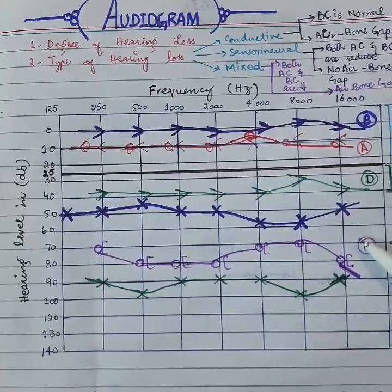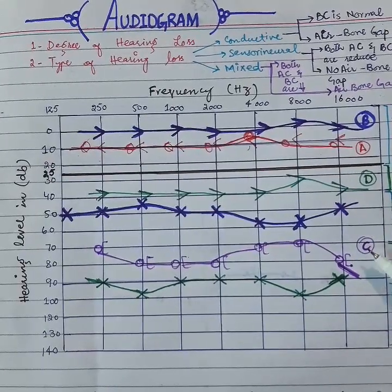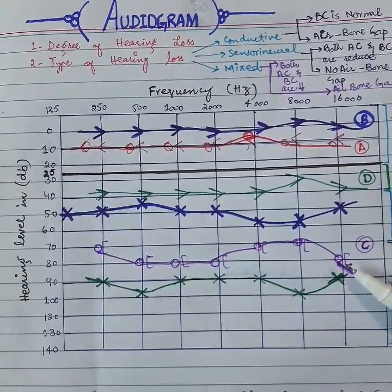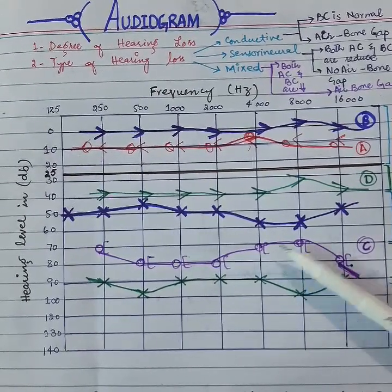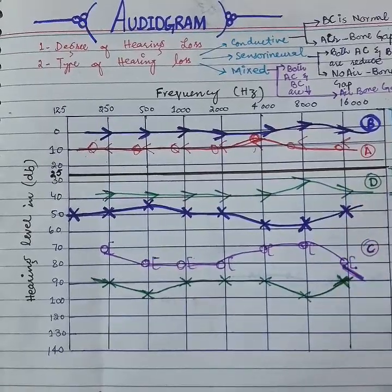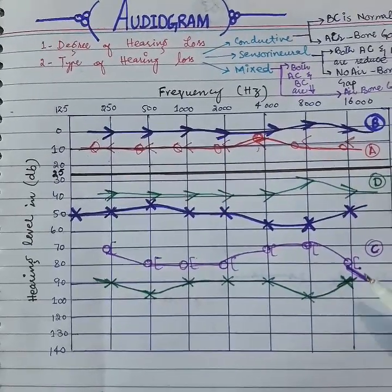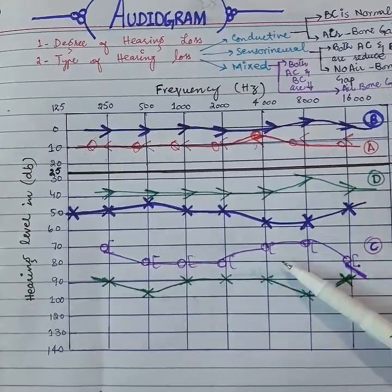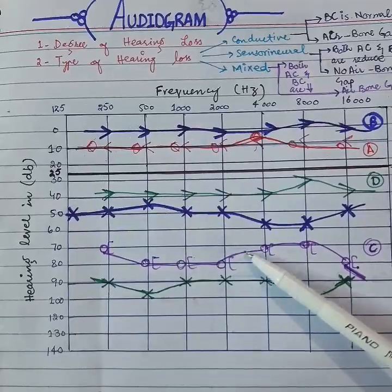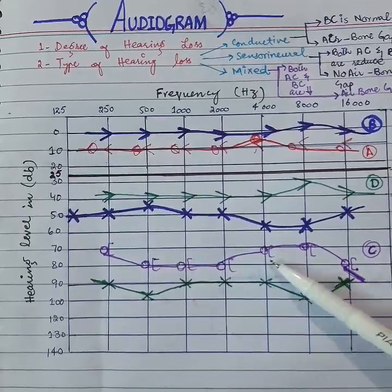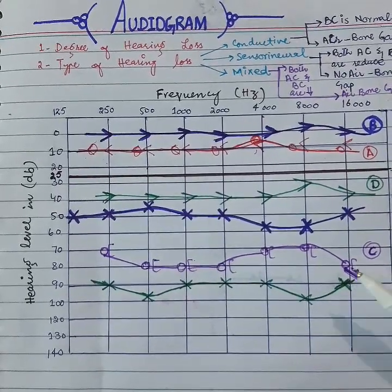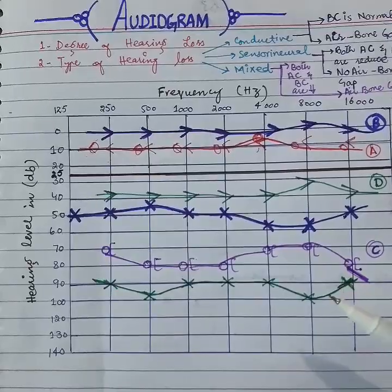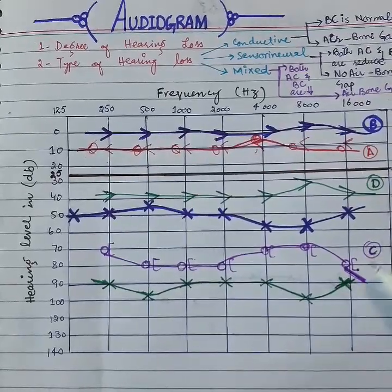Now, coming to graph C. Look at the bone conduction, which is below the 25 decibel range. And air conduction is also reduced. There is no air-bone gap. This indicates sensorineural hearing loss.